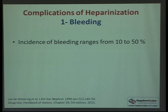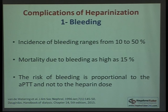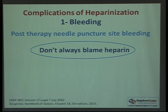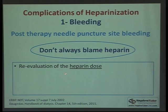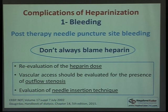Regarding complications of heparinization: bleeding incidence in our patients is 10–50%, and mortality due to bleeding can be as high as 15%. Bleeding risk is directly proportional to the aPTT, not the heparin dose, so heparin should be individualized. Post-dialysis needle puncture site bleeding is also seen — don't always blame heparin. One of the most common causes of prolonged post-dialysis puncture site bleeding is outflow stenosis of the vascular access, especially if it is recurrent. Also evaluate the nurse's needle insertion technique.